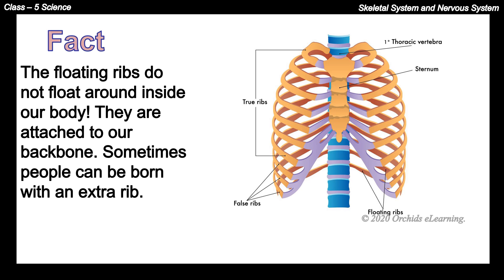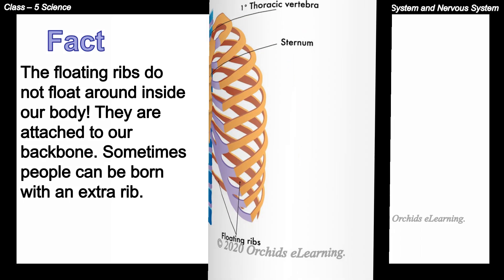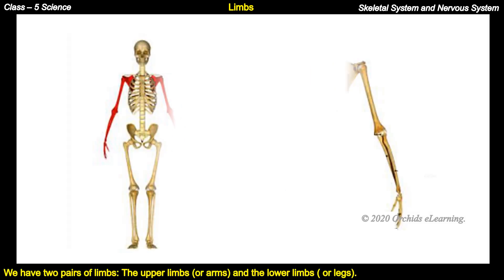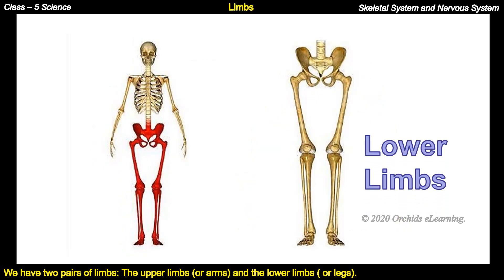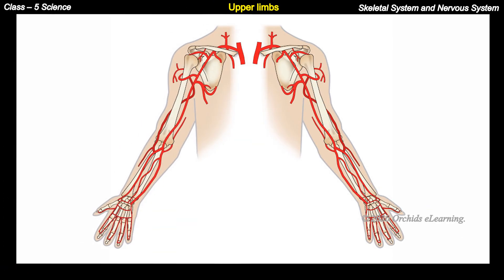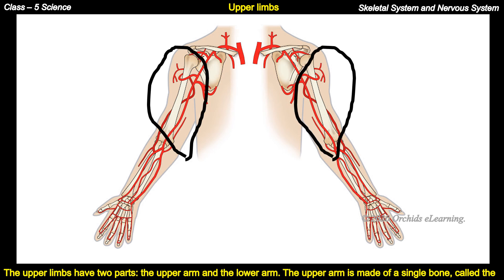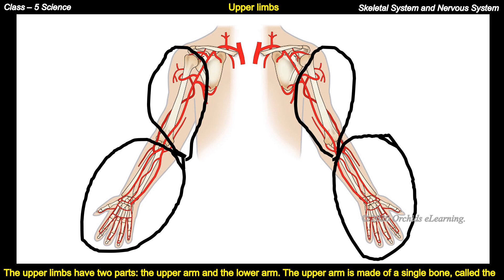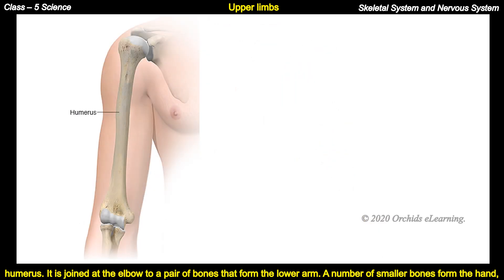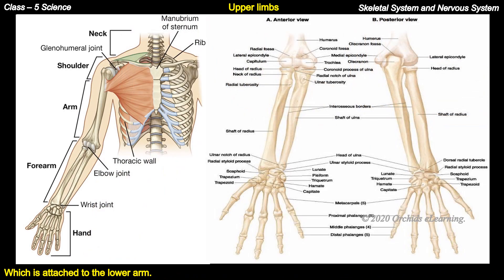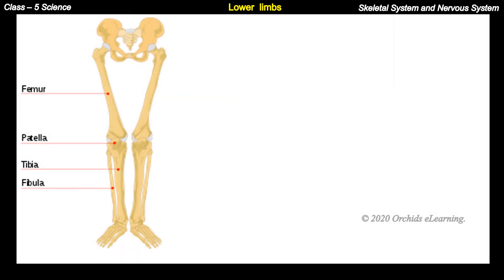We have two pairs of limbs: the upper limbs or arms, and the lower limbs. The upper limbs have two parts: the upper arm and the lower arm. The upper arm is made of a single bone called the humerus. It is joined at the elbow to a pair of bones that form the lower arm. A number of smaller bones form the hand, which is attached to the lower arm.